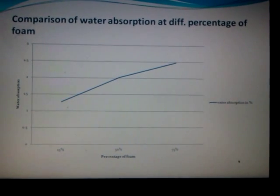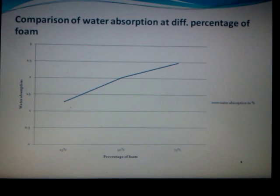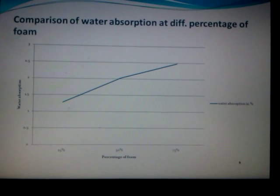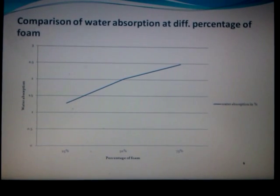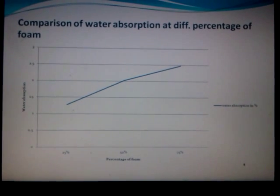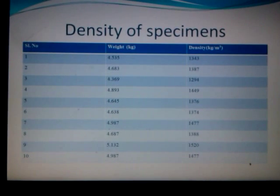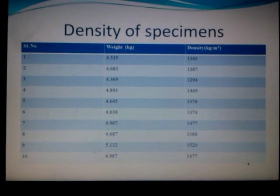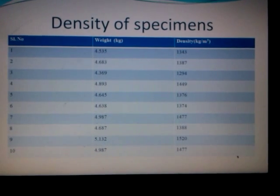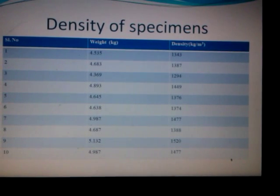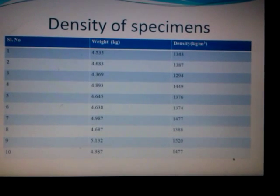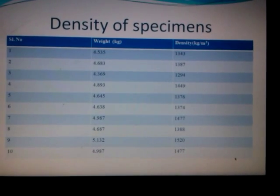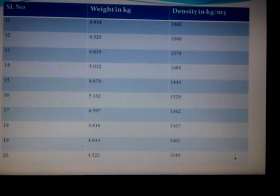Comparison of water absorption at different percentages of foam shows that water absorption capacity at 75% foam is higher compared to 25% foam. These are the density results of the specimens. We tested a total of 36 cubes, and the density of all 36 cubes is below 1,840 kg per cubic meter, confirming it is lighter than conventional concrete. All density values range around 840 kg per cubic meter.